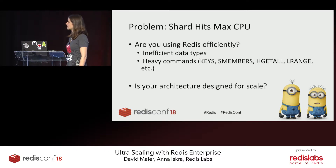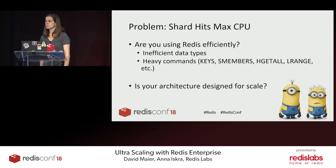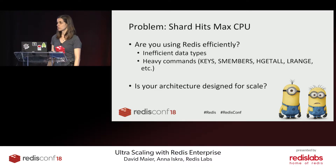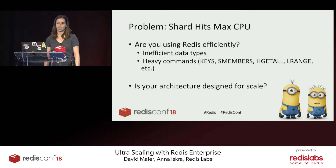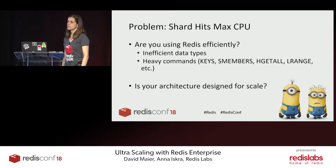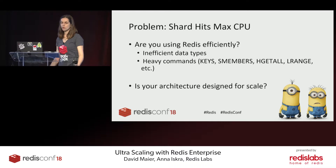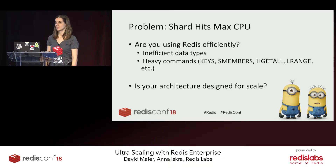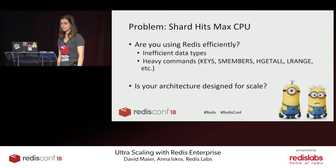At Redis Labs, the first thing we do is not necessarily scaling, because we really want you to be efficient. Sometimes throwing money at a problem is a good start, but eventually you want to be cost-efficient. So one of the questions I would ask is: are you using your data types efficiently? Are you using strings where you should use hashes? Are you using sorted sets when all you need is lists? You may be paying the penalty of the CPU.